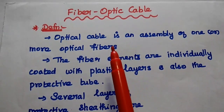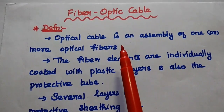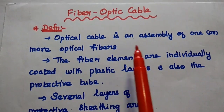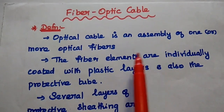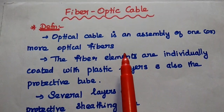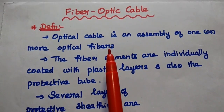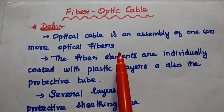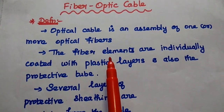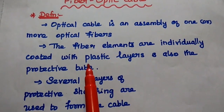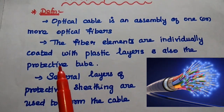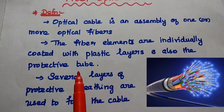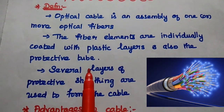Dear students, now we are going to discuss fiber optic cable. Optical cable is an assembly of one or more optical fibers. That means it is a structure which contains more number of optical fibers with protective layers. The fiber elements are individually coated with plastic layers and also the protective tube in the optical cable.